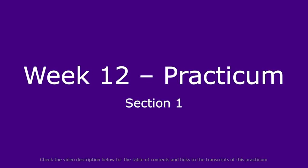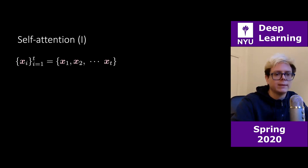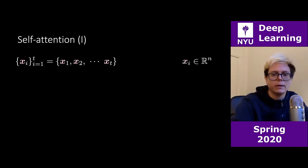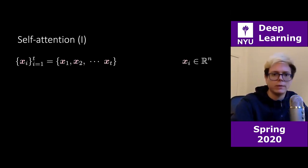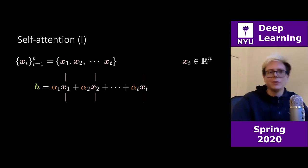Let's start with self-attention. We have a set of x's — x subscript i, where i goes from 1 to t. So you have t different elements in the set: x1, x2, ... xt. Each xi belongs to R^n, an n-dimensional vector. The key idea is that the hidden representation h is going to be a linear combination of these vectors.